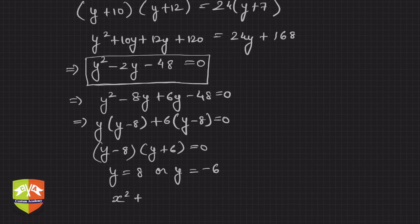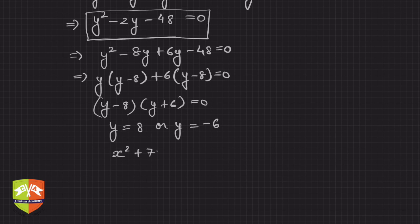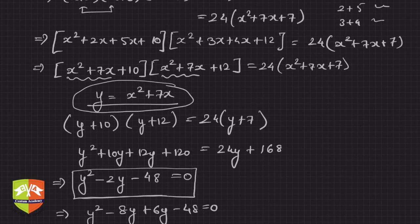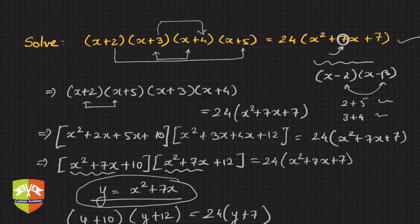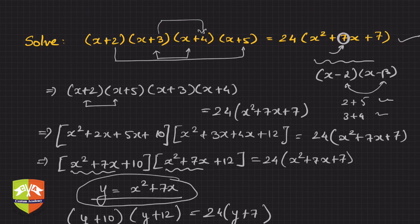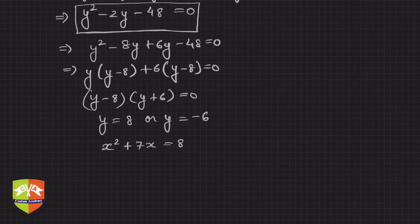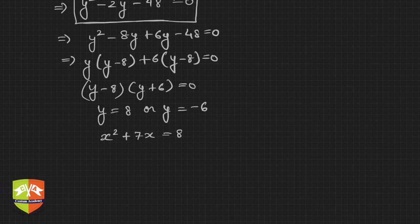That means we got two quadratic equations. So x²+7x becomes just mundane mechanical work to solve this quadratic equation. The only catch, the real mathematics, was involved here where you had to think how to convert this equation into something which is within our reach.